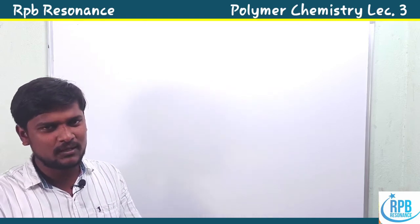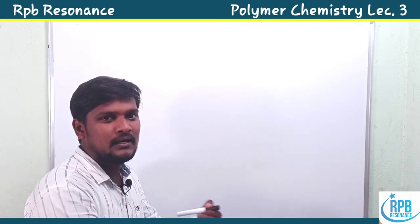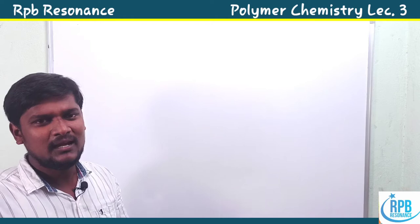Hi everyone, welcome to RPB Resonance Chemistry. Let's continue my lectures on polymer chemistry. Today I'm going to discuss another type of polymers. In previous classes I discussed plastic polymers; today I'm going to discuss fabric polymers. Fabric polymers are generally synthesized by step-growth polymerization, that is nothing but a condensation process. Fabric materials are generally polyester derivatives or polyamide polymers.